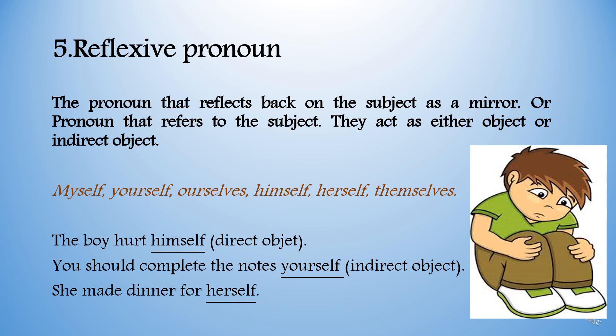Reflexive pronoun. The pronoun that reflects back on the subject — like a mirror — or refers to the subject, is called a reflexive pronoun. They act as either object or indirect object — like myself, yourself, ourselves, himself, herself, themselves. Example: The boy heard himself — here 'himself' is a direct object reflecting on the noun 'the boy.' You should complete the notes yourself — here 'yourself' is an indirect object. She made dinner for herself.